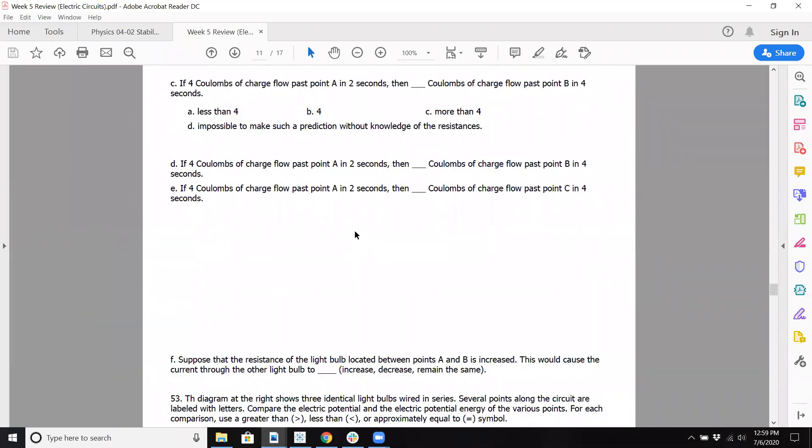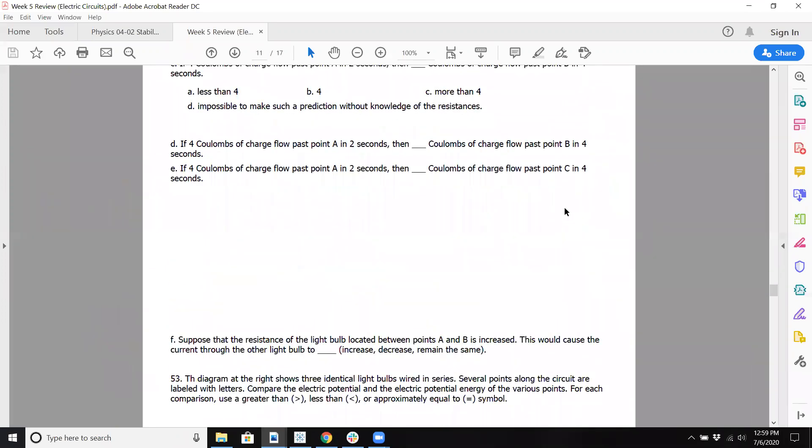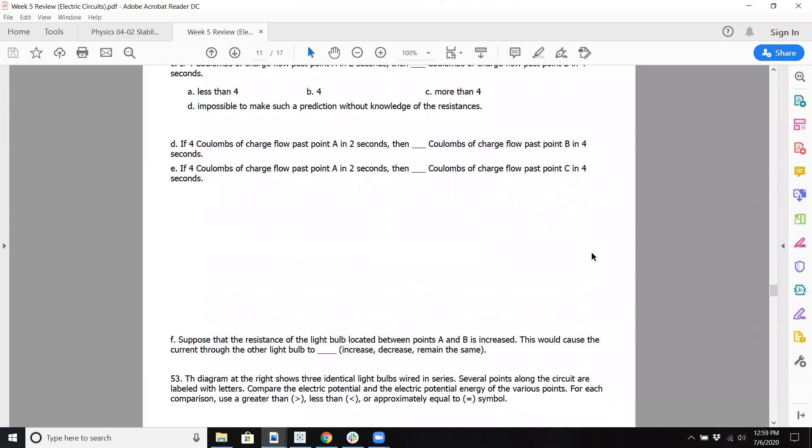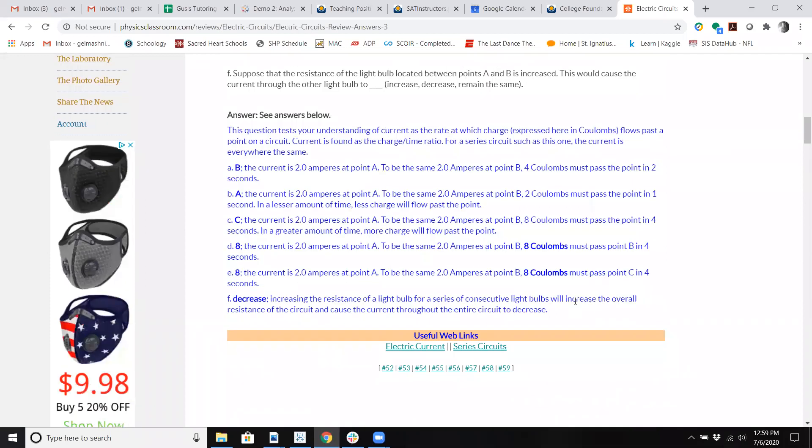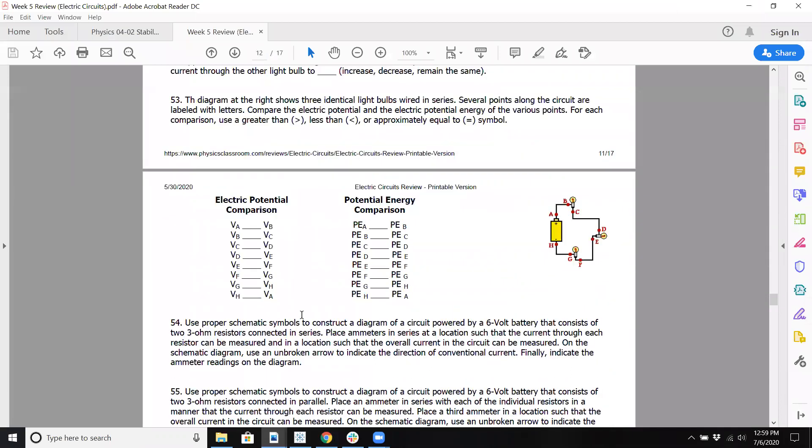F is asking, suppose the resistance of the light bulb located between points A and B is increased. So this light bulb has a higher resistance. This will cause the current, well, if you have more resistance, not as much current is going to flow through. Remember V equals IR. In that case, you're going to see the current decrease as a result. If you increase the resistance, it will increase overall resistance and cause the current in the entire circuit to decrease.